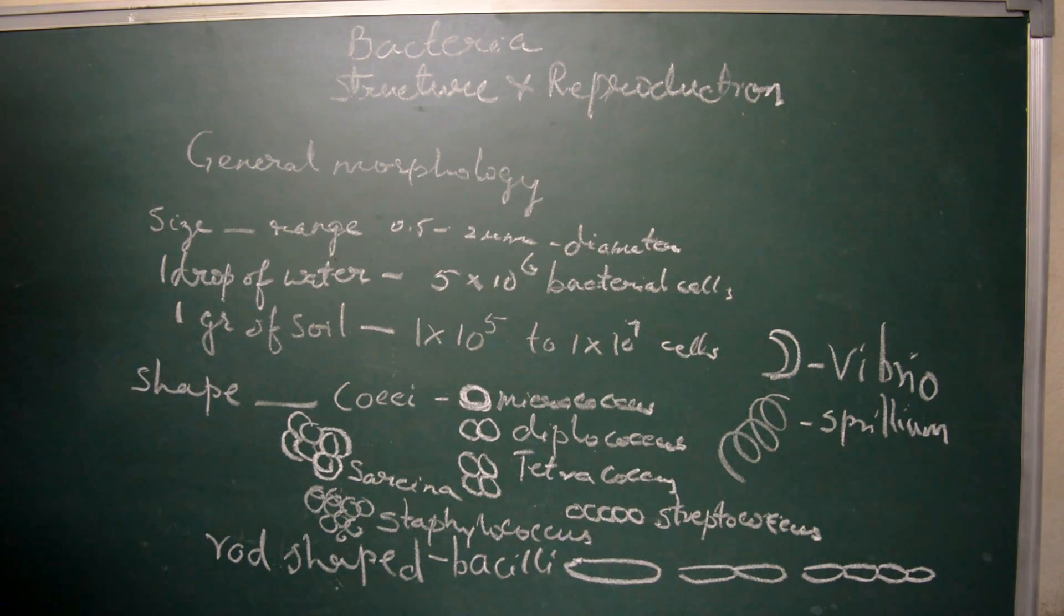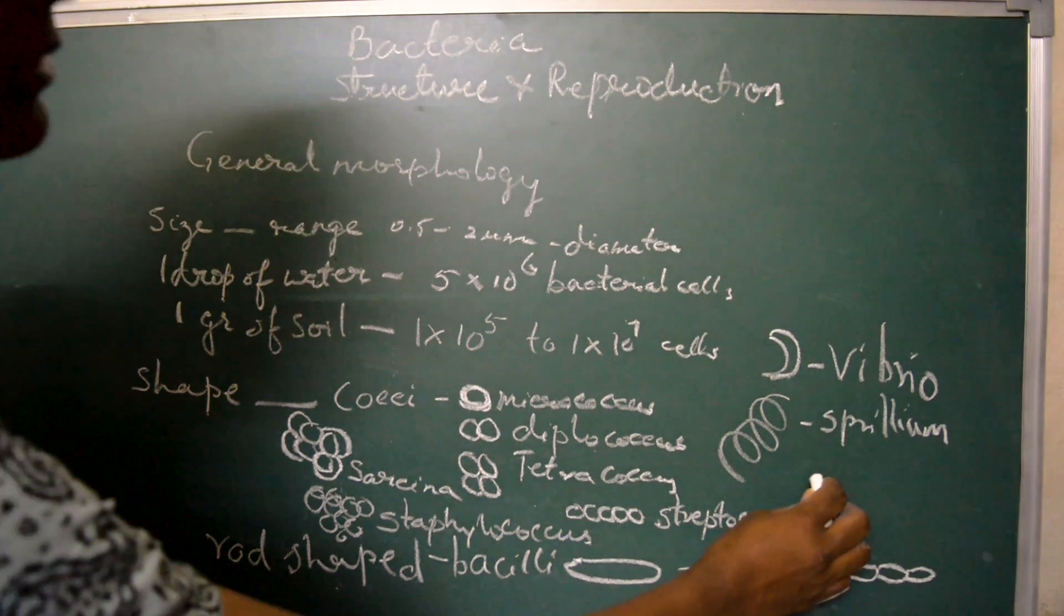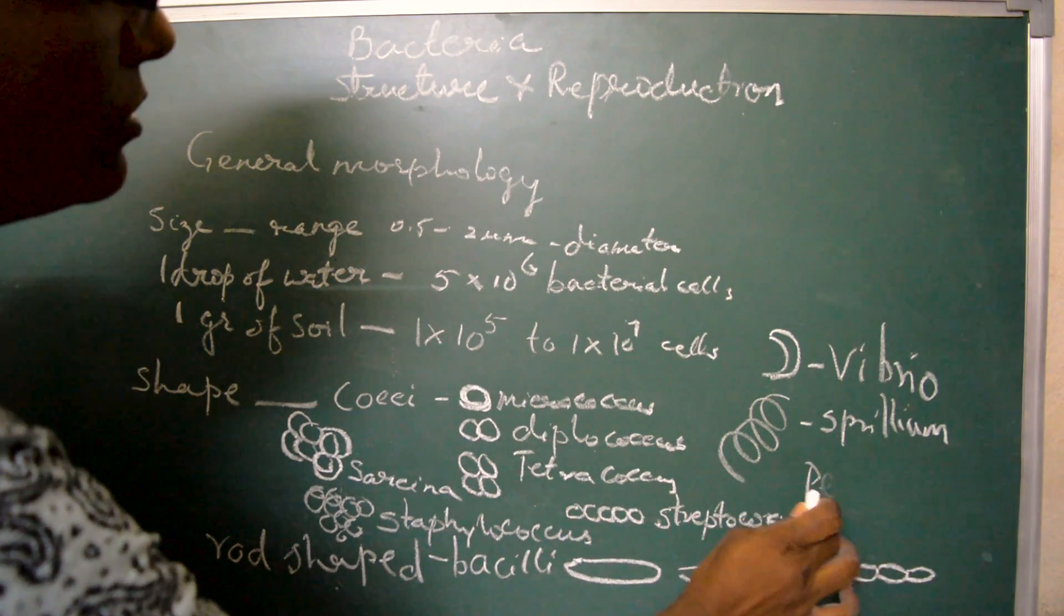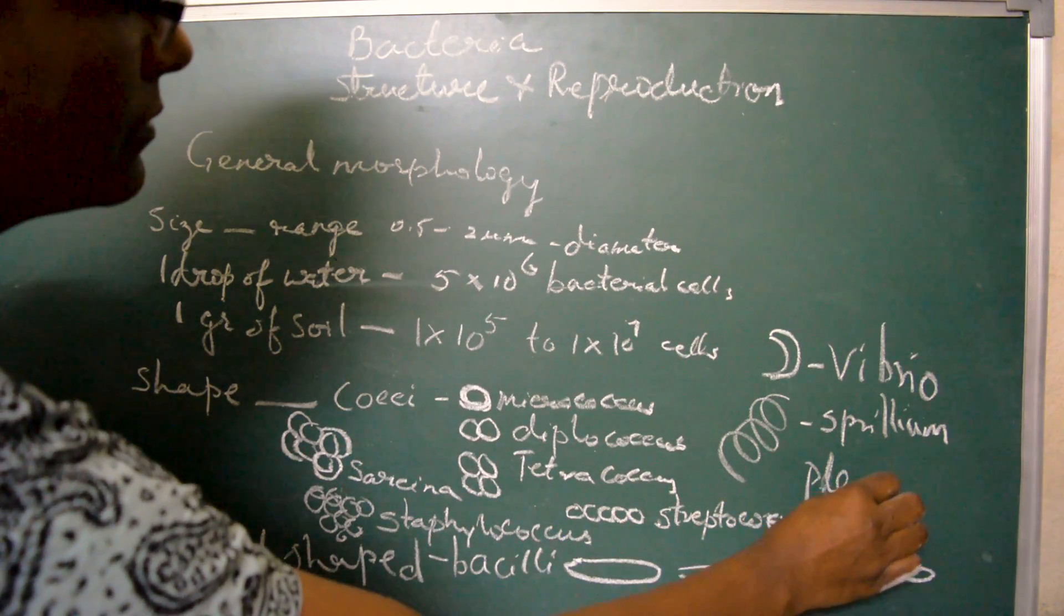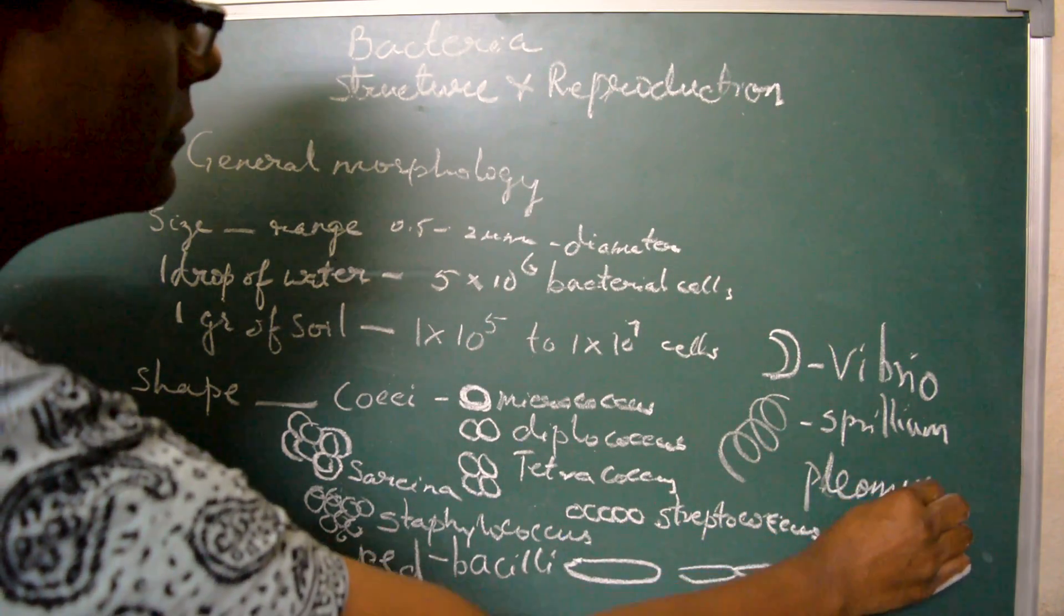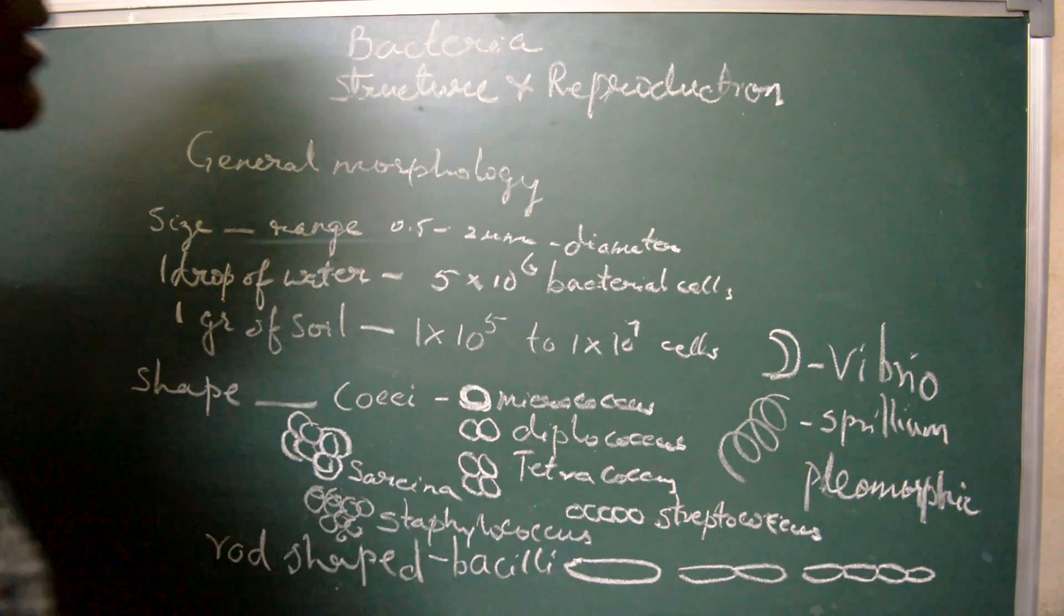Certain bacteria have the ability to change their shape, they are pleomorphic type of bacterial cells.